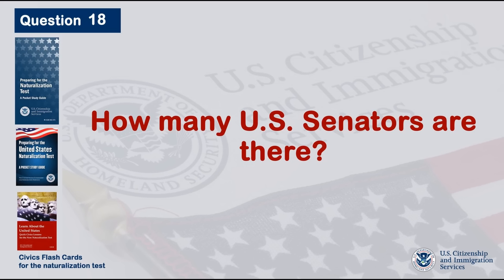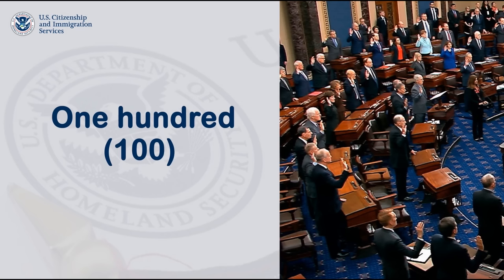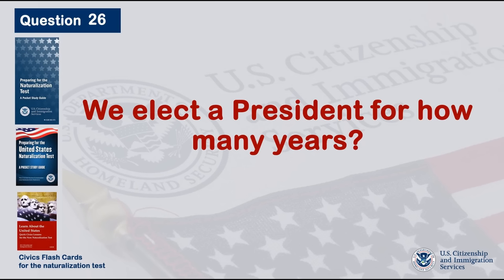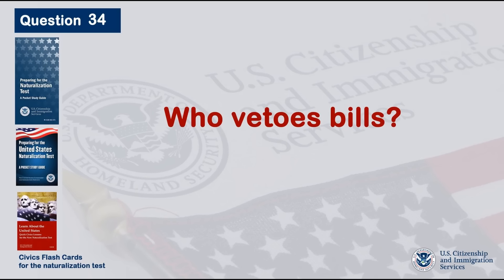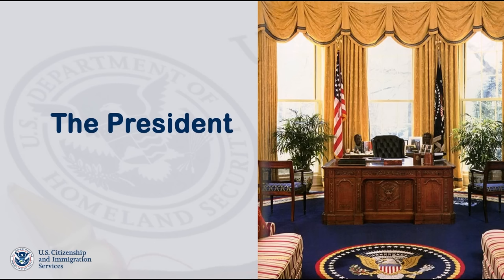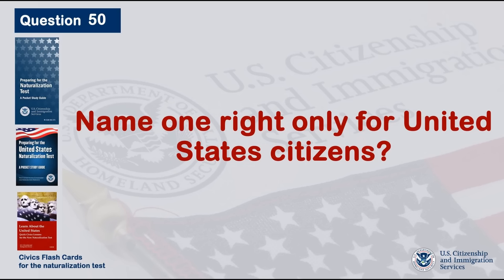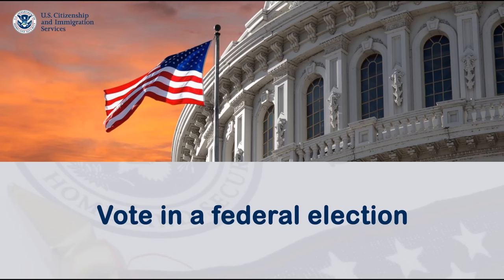How many U.S. senators are there? One hundred. We elect a president for how many years? Four. Who vetoes bills? The president. Name one right only for United States citizens. Vote in a federal election.